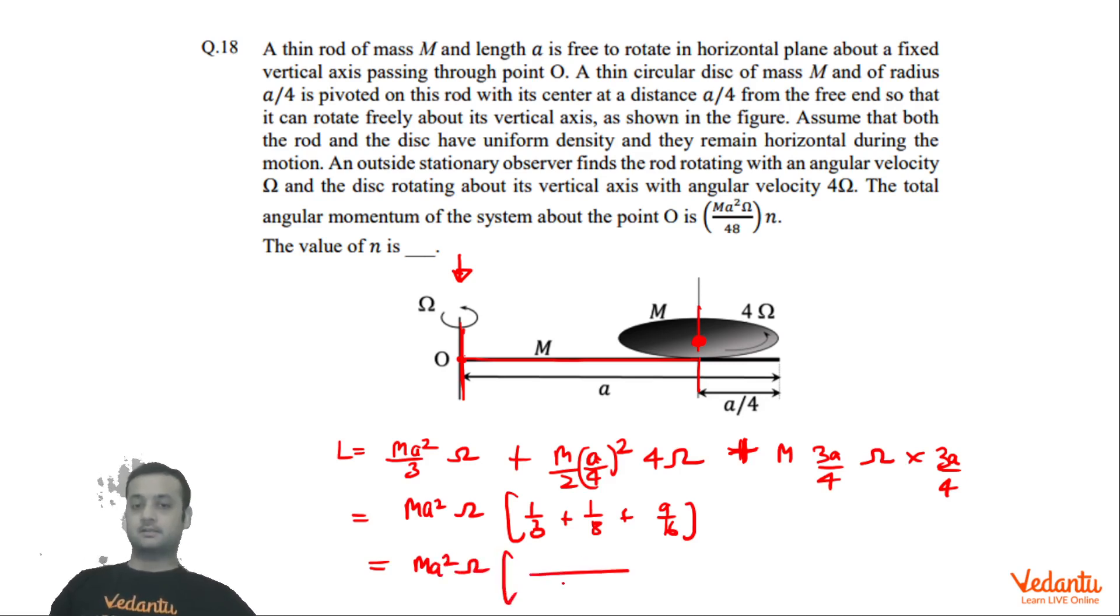So if you take the LCM, what do we get? 48 will be the LCM, and this will be 16, this will be 6, and this will be 97. So this will become Ma²ω × 49/48. So if you compare this with the given expression, n will come out to be 49.